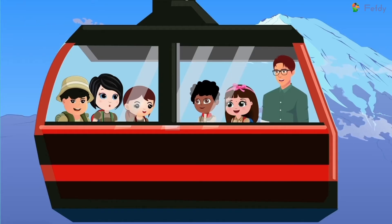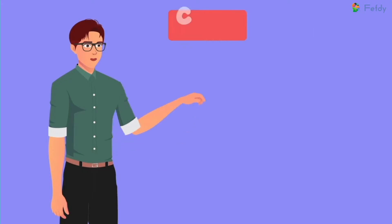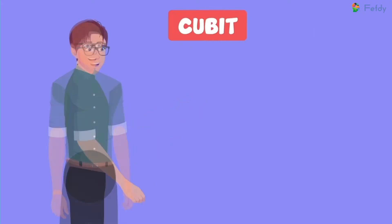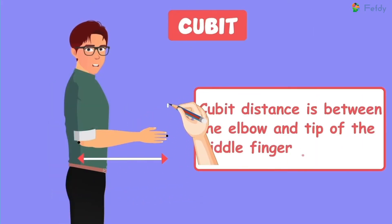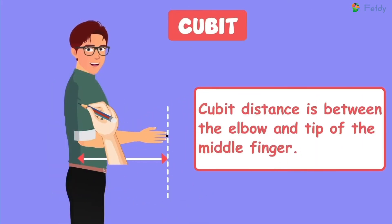Okay, Dad. Cubit. Cubit distance is between the elbow and the tip of the middle finger.